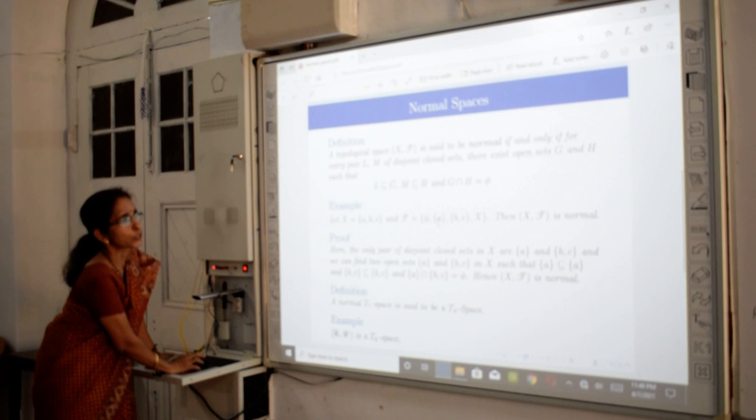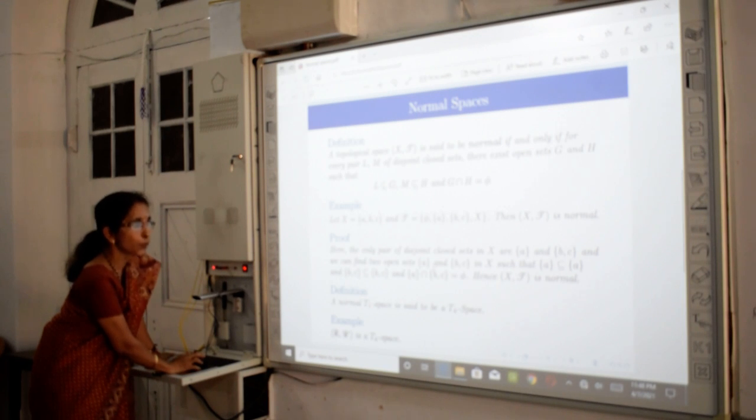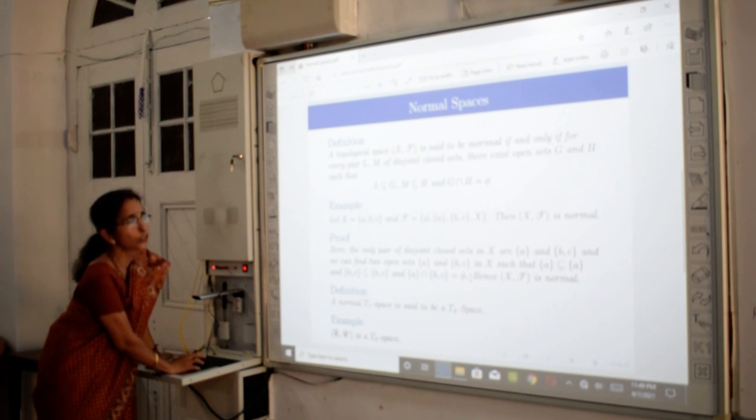There are two disjoint closed sets: {A} and {B, C}. And here, we have two open sets for these closed sets, {A} and {B, C}, in X such that {A} is contained in {A} and {B, C} is contained in {B, C}. And these sets are also disjoint. And in this way, we can say that X is normal.